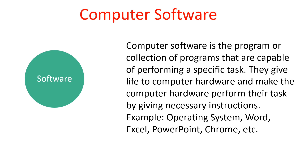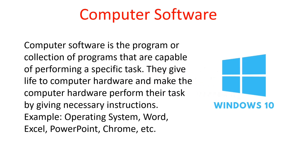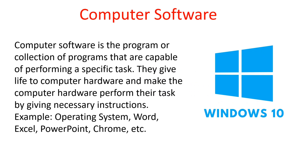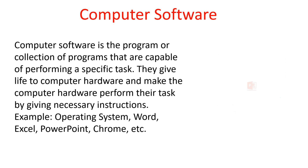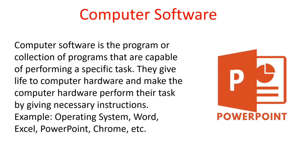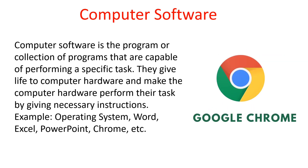Software is the important component that guides computer hardware to perform tasks. Examples of computer software include operating systems like Windows 10, Windows 11, or Linux, and application software like MS Word, Excel, PowerPoint, or internet browsing software like Google Chrome — all these are examples of computer software.